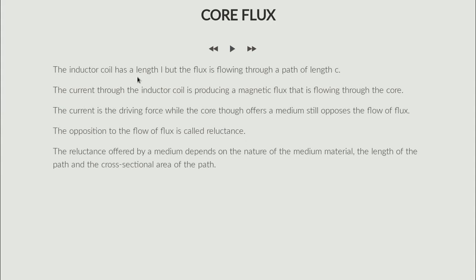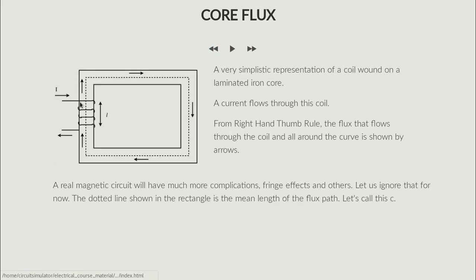The inductor has length L, but the flux flows through a path of length C. In the case of a coil wound in air, the flux path was also L because the flux completes the circuit from all directions once it leaves the coil. Here, however, there is a constrained path — like water flowing through pipes — it just can't flow anywhere it wants.